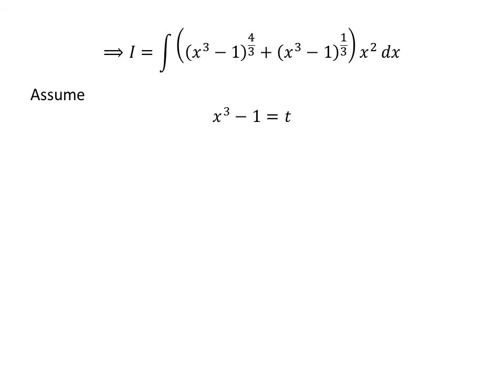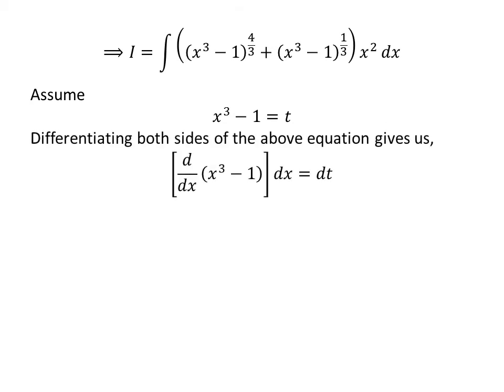We will solve the integral by application of the substitution method. Let us assume cube of x minus 1 is equal to t. Taking the differential of both sides gives us the derivative of cube of x minus 1 with respect to x, times differential of x, is equal to differential of t. We know the derivative of cube of x minus 1 is equal to 3 times square of x. So 3 times square of x times dx equals dt. Rearranging gives us square of x times dx is equal to 1 upon 3 times dt.